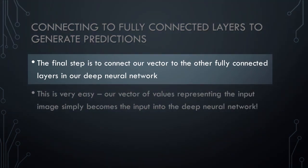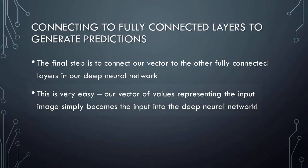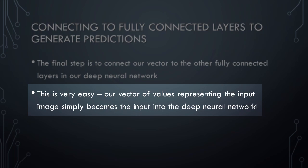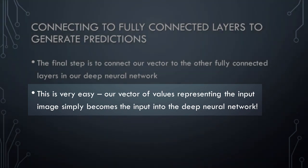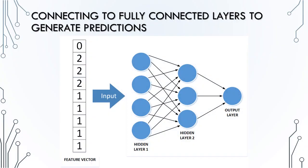Finally, we simply need to connect our vector to the other dense, fully connected layers that comprise the rest of our deep neural network. Our vector of values representing the input image simply becomes the input into the deep neural network — the feature vector serves as the input layer. In this way, all of the information about the image, stored in compressed form in the feature vector, can be used by the downstream layers in the neural network.